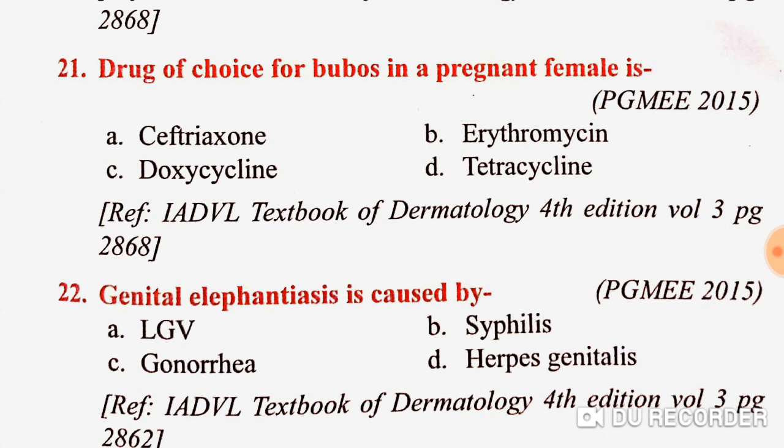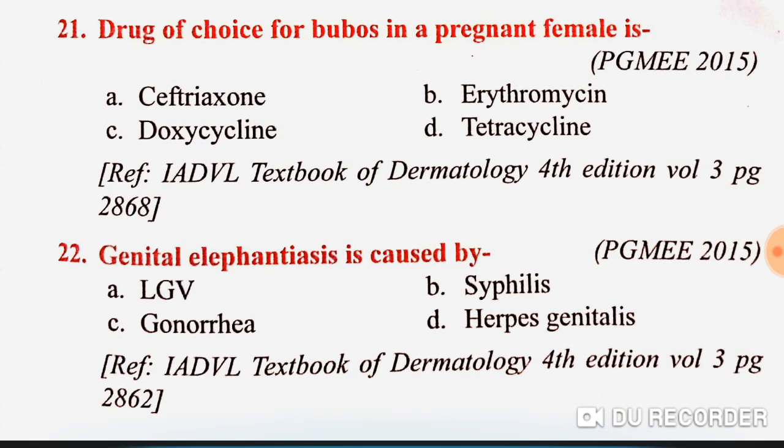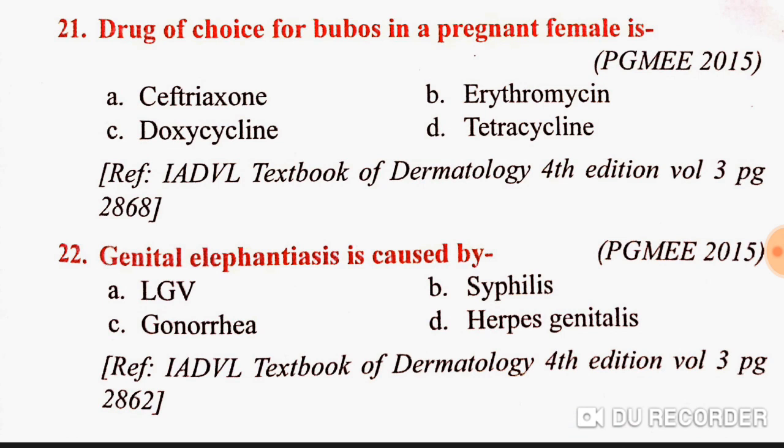Drug of choice for buboes in a pregnant female — in pregnancy we can give erythromycin. If you think this answer is wrong, you can put your answer in the comment box. I hope erythromycin is correct.